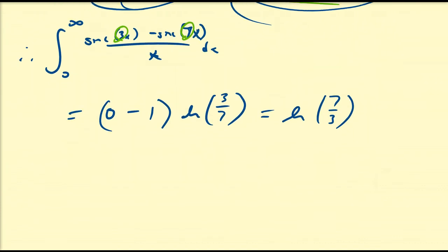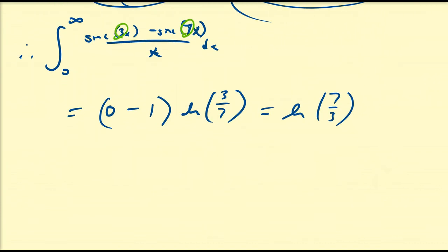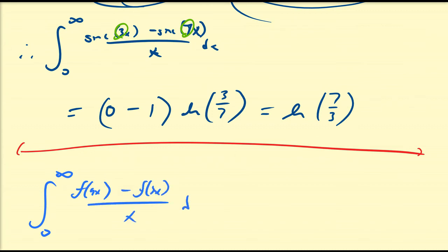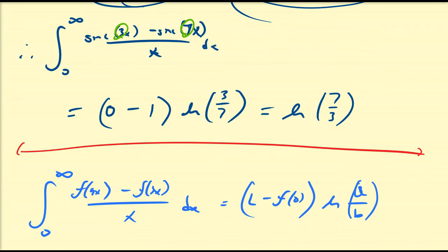So those are just a few examples, along with the proof of Frullani integrals, which are any integral of the form from 0 to infinity of f(ax) minus f(bx) all divided by x dx, which equals L minus f(0) times the natural log of a divided by b, provided that f has the properties mentioned. Hope you enjoyed.